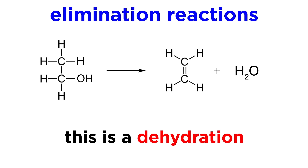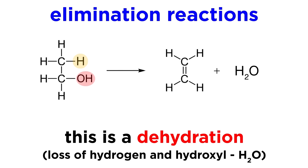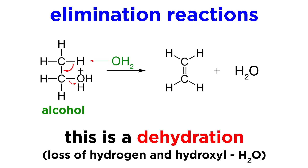Another similar reaction is dehydration. This will occur when a hydrogen and a hydroxyl group are on adjacent carbons, so alcohols are the substrate for a dehydration. Mechanistically, this will be very similar to the dehydrohalogenation, except that it will start with protonation of the hydroxyl group. This is now essentially a water molecule that is capable of leaving the substrate, so another water molecule will take the adjacent proton, the pi bond will form, and water will be kicked off, leaving the resulting alkene.